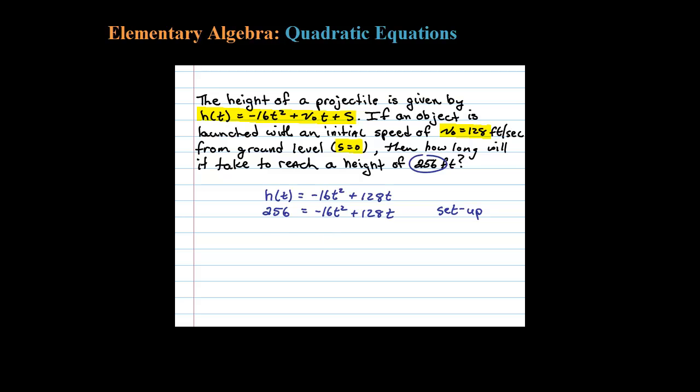First thing I'm going to do is add 16t squared to both sides, and then I'm also going to subtract 128t. Since those aren't like terms, let's write it like this: 16t squared minus 128t plus 256 equals zero. At this point I notice 16 is a GCF.